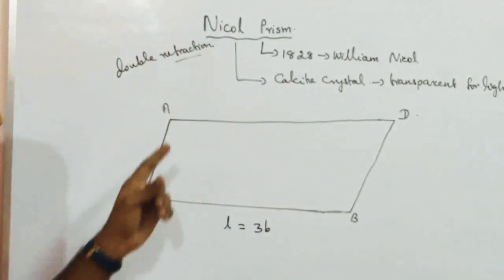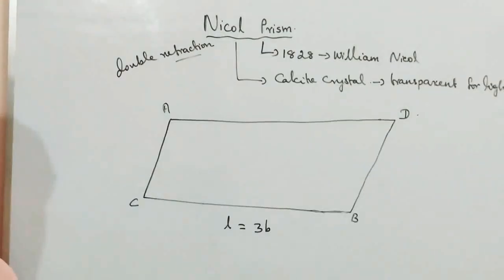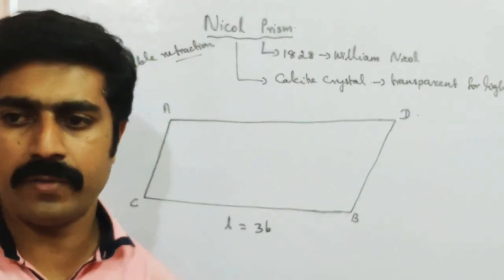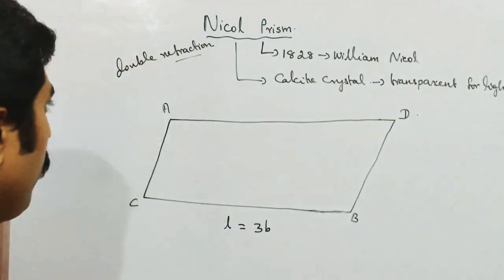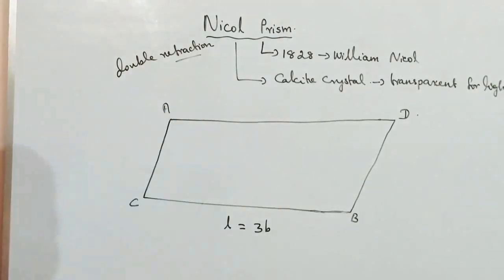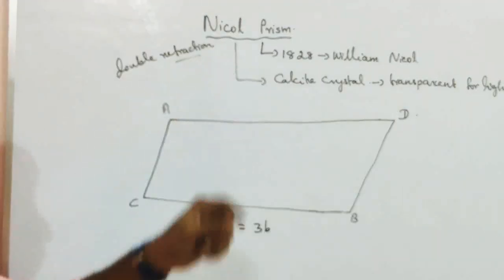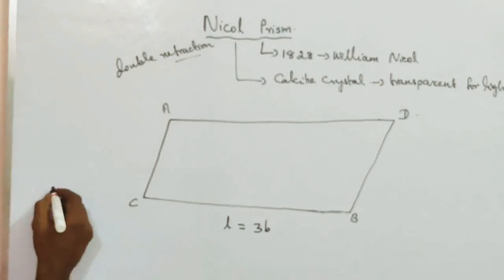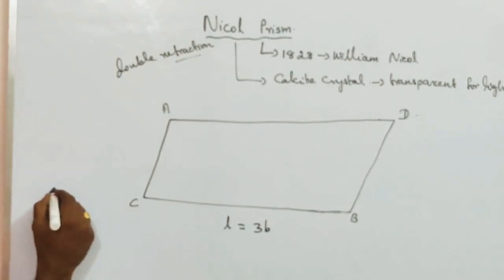What is refraction? Refraction is the bending of light waves. So when light travels from rarer to denser or denser to rarer, it is double refraction.